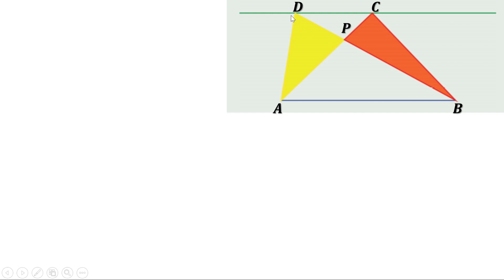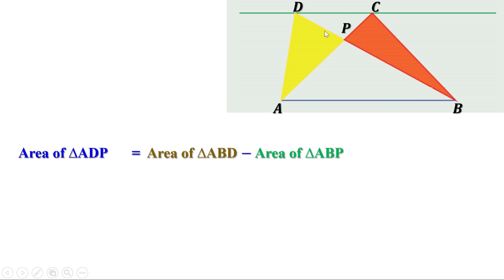Consider triangle ABD. If you subtract the area of triangle ABP from it, what remains is the area of triangle ADP — the yellow triangle. That is, area of triangle ADP = area of triangle ABD − area of triangle ABP. Now look at triangles ABD and ABC: their areas are the same because they have the same base and their third vertices are on a line parallel to the base. So we can write: area of triangle ADP = area of triangle ABC − area of triangle ABP.